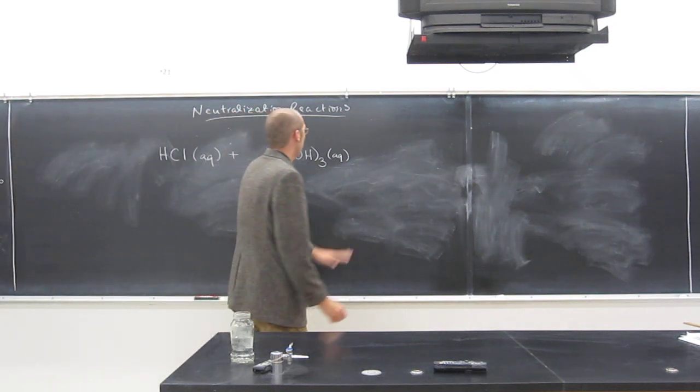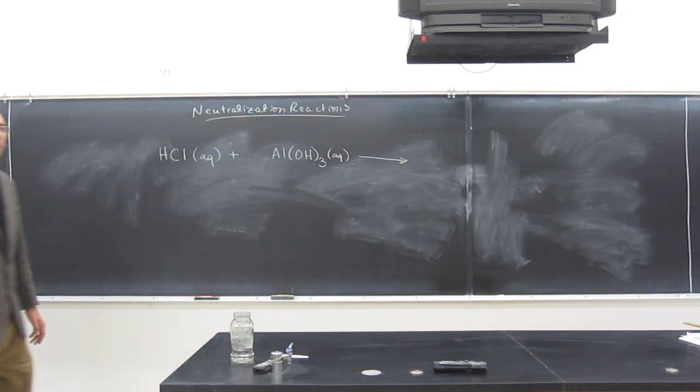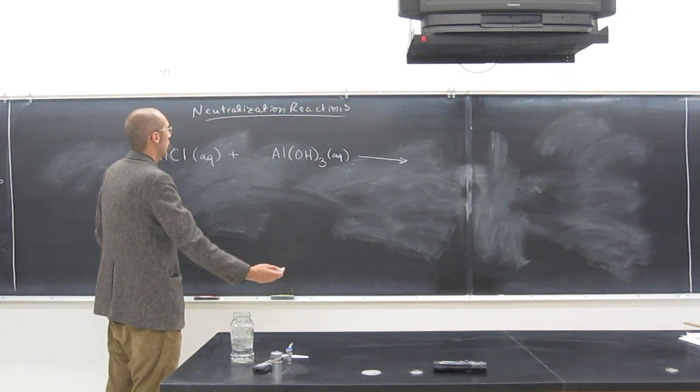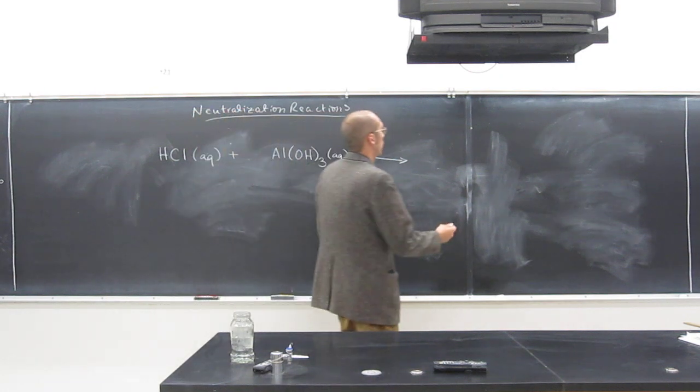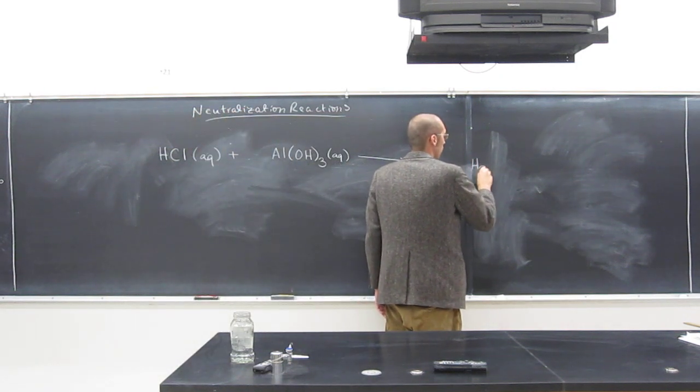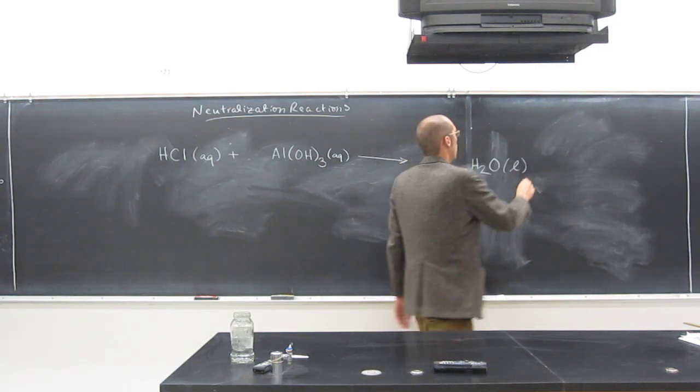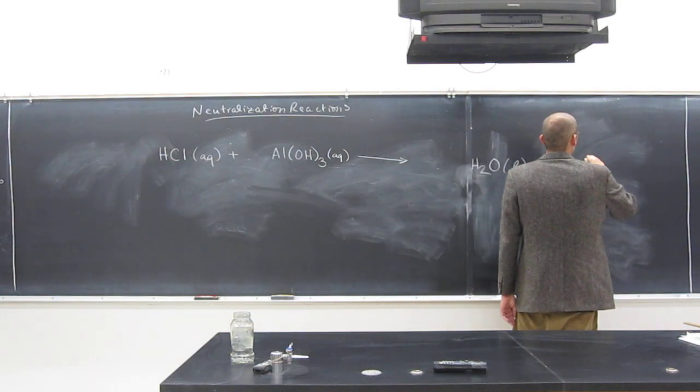These are going to react. This is a neutralization reaction, also a double displacement reaction, to form two molecules. Remember a neutralization reaction will form water and a salt. Do you remember that? So those two molecules are going to be water as a liquid, plus a salt. What salt is it going to be? Aluminum chloride. Yeah, aluminum chloride.